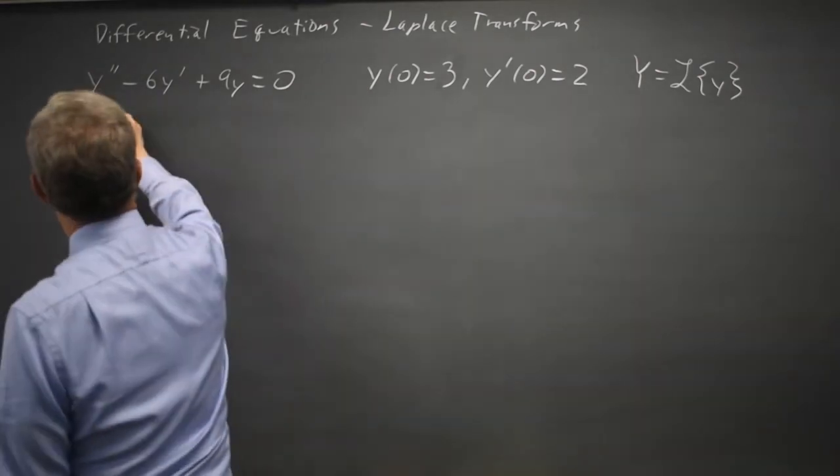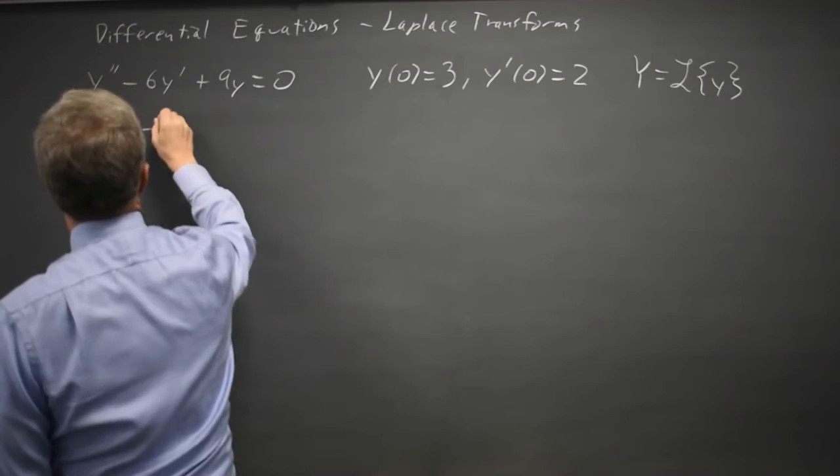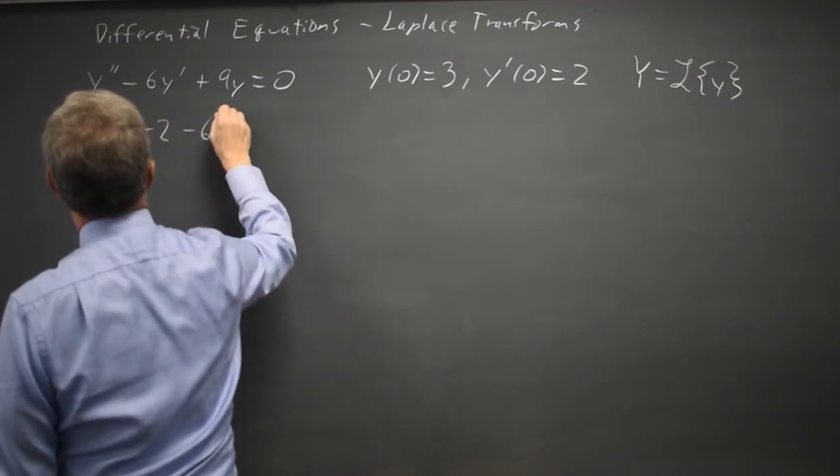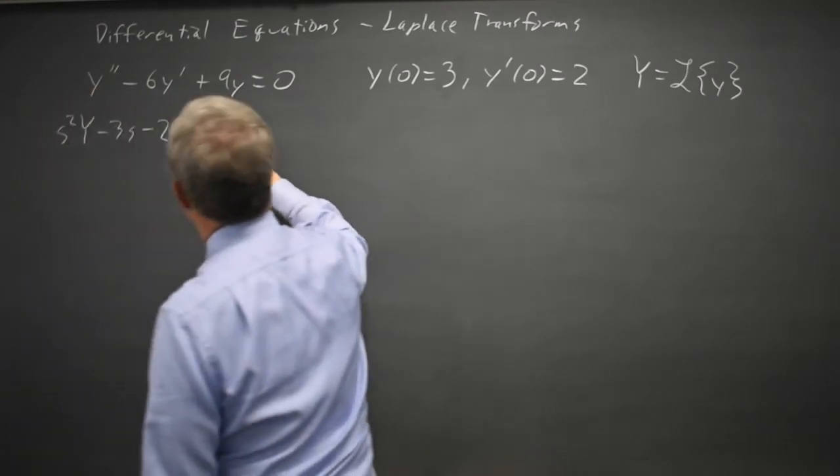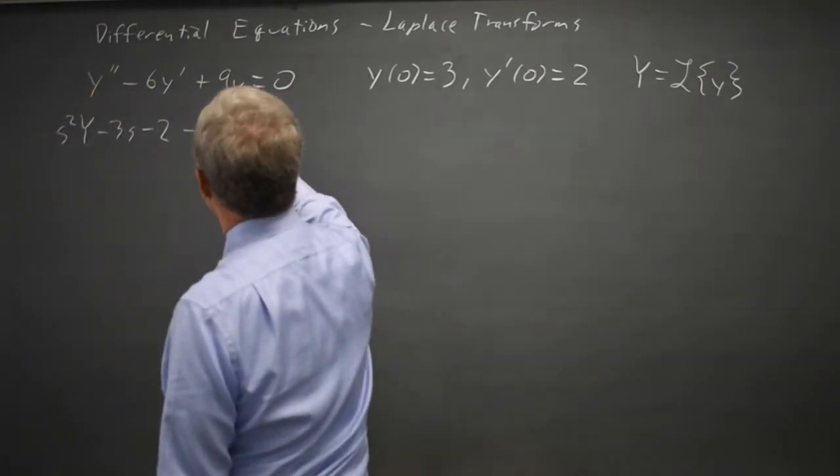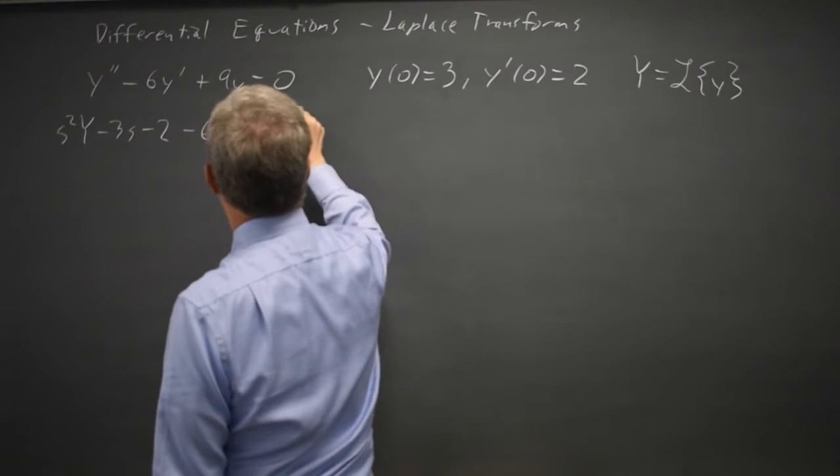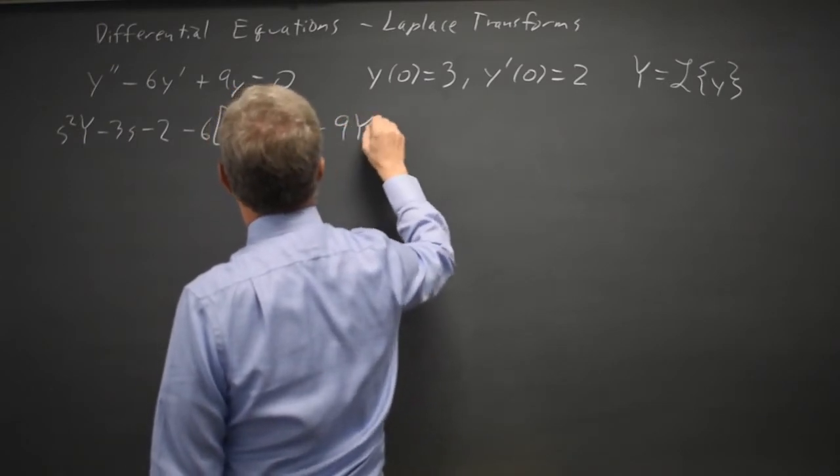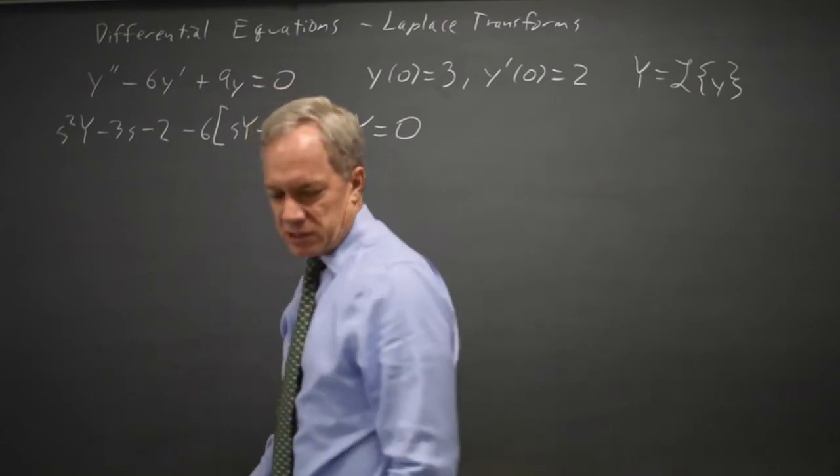Minus s times y of 0 minus y prime of 0 and then minus 6 times the transform of y prime which is s uppercase Y minus y of 0 and then plus 9 times the transform of y equals the transform of 0 which is 0.